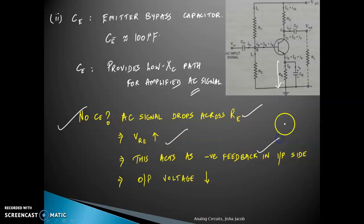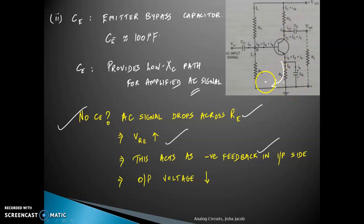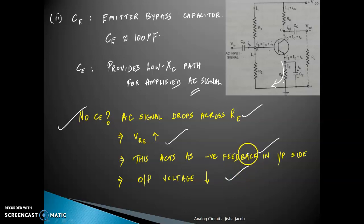When voltage drops across R-E, notice that R-E is common between input and output, so it acts as a negative feedback. Part of the output signal is fed back to the input, reducing the output voltage. If the output voltage decreases, amplification is reduced — which is undesirable. So you definitely need C-E.